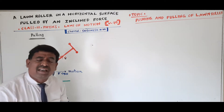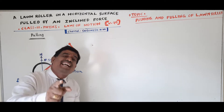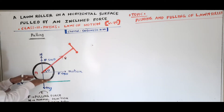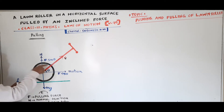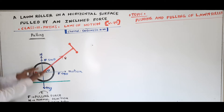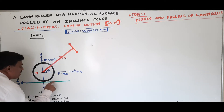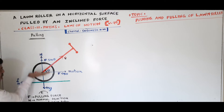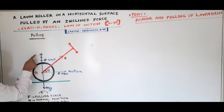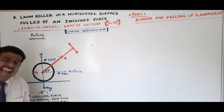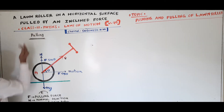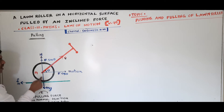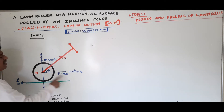For every action there will be an equal and opposite reaction. This land roller is pressing the earth with some force equal to weight mg — that is the action. The surface of the earth applies a reaction force perpendicular to the surface of contact, which we call the normal reaction N.